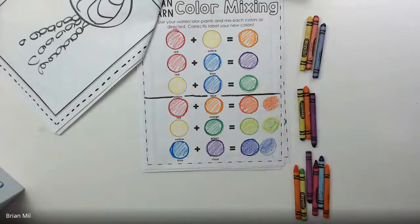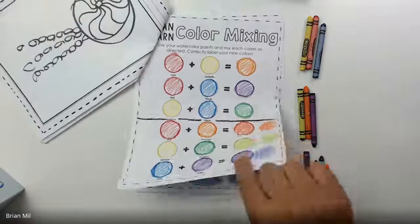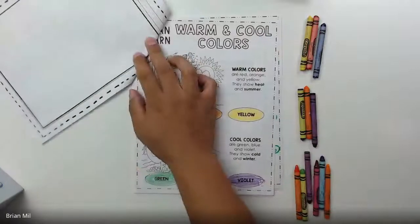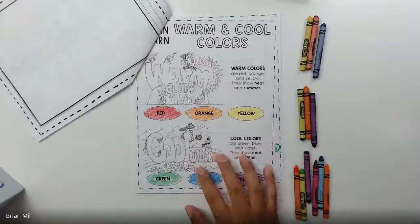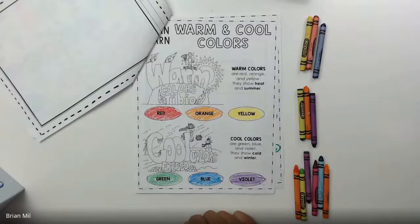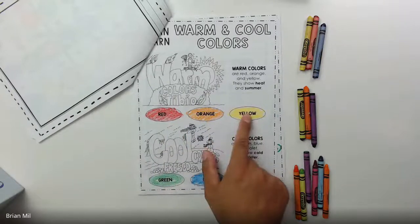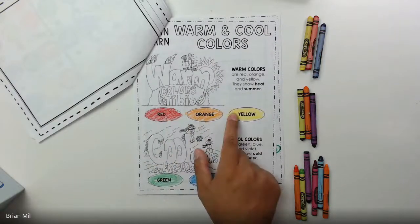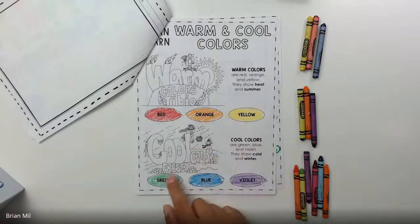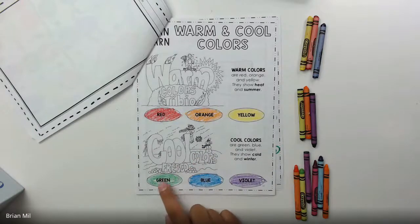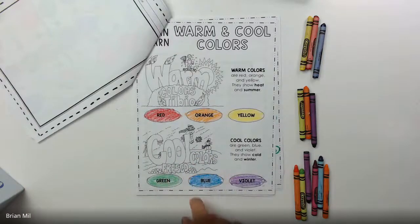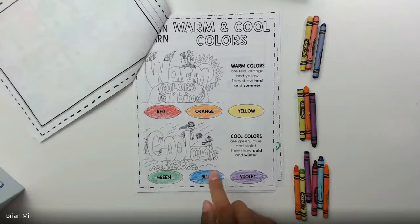We learned about that last time. So if I flip over to the next page, we went over this as well. I think this was last week. We learned about warm and cool colors, red, orange, and yellow. So that was two of the primary colors and one secondary. And then we learned about the cool colors, which was two of the secondary and then one of the primary colors.